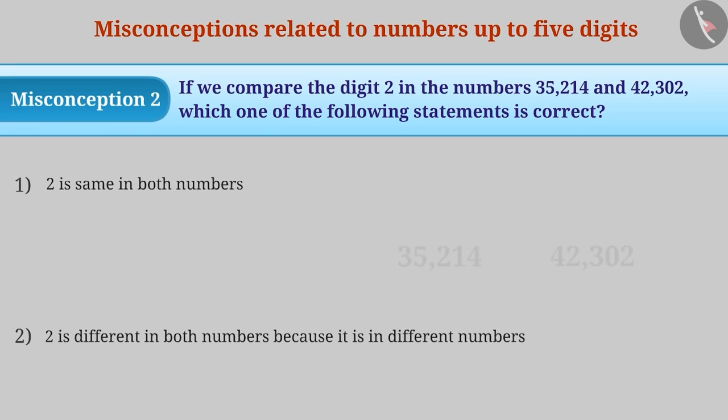Some students fail to understand the concept of place value. So, they think that the 2 in the hundreds place is equal to the 2 in the units place or ones place. This is a misunderstanding.